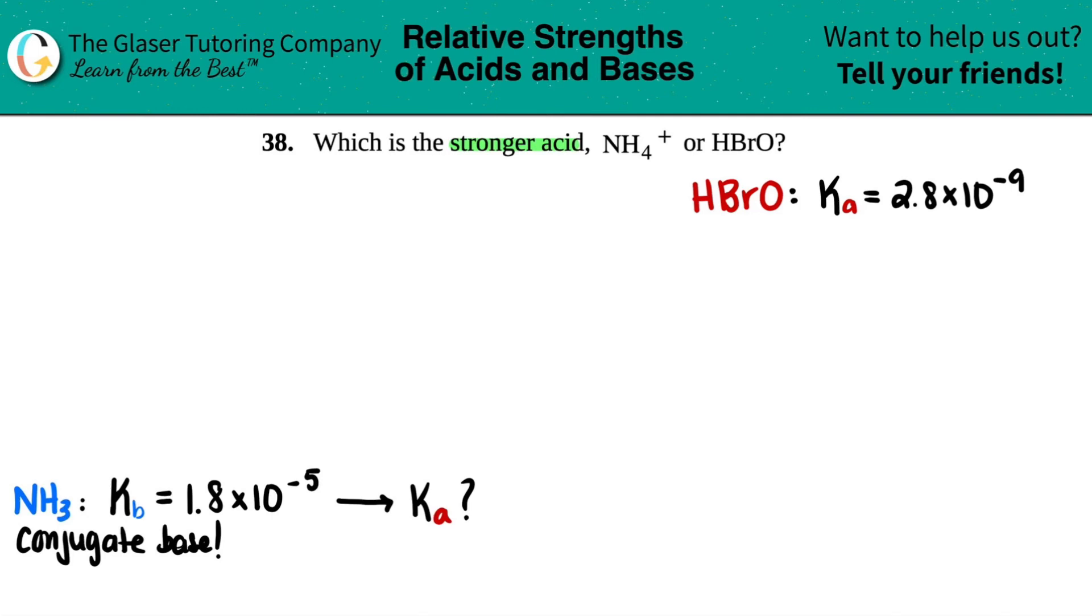And yes, I do. It is this equation right here. It's the Kw equation. Kw equals Ka times Kb. And remember, this is only going back and forth between conjugates, the compounds that only differ by one hydrogen.